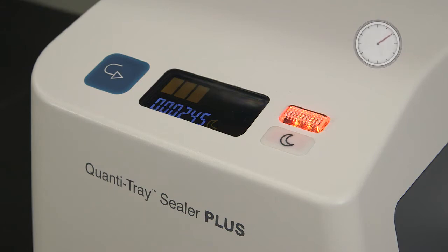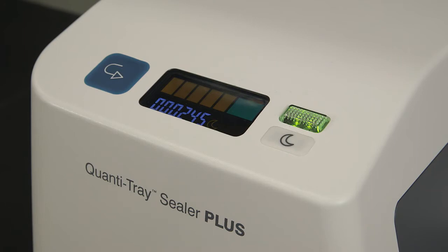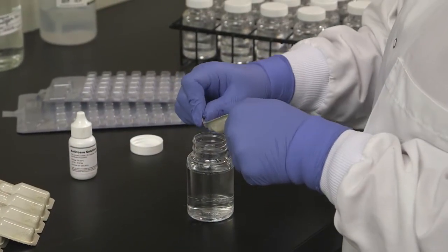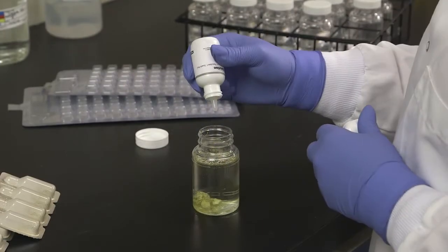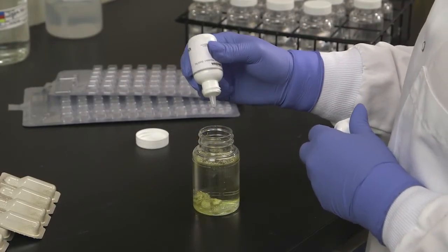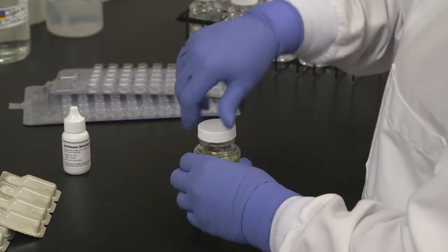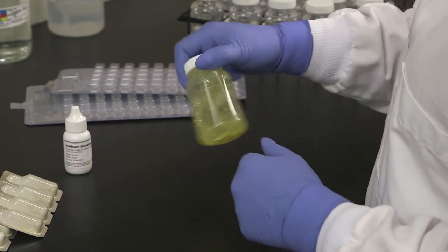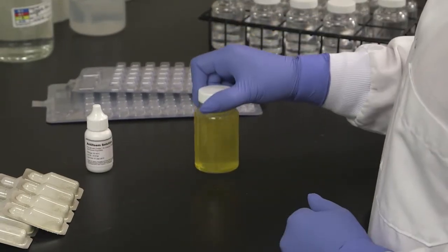Turn on the sealer and wait until a green bar appears on the display. The sealer has now reached operating temperature. Add the ColiShore powder to a 100 ml sample. Add 5 drops of IDEXX anti-foam solution. Cap the vessel and shake thoroughly. Allow the sample to rest for at least 1 minute and then shake thoroughly again to make sure no large media particles remain.